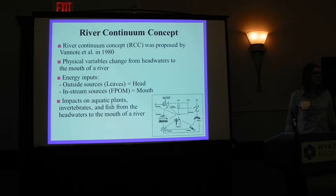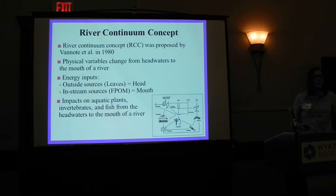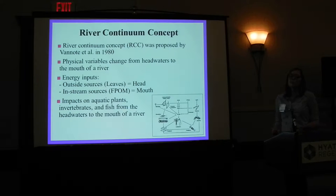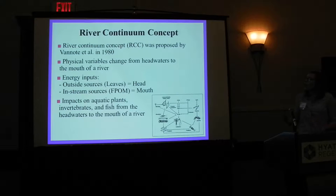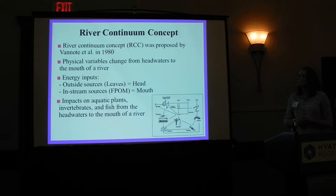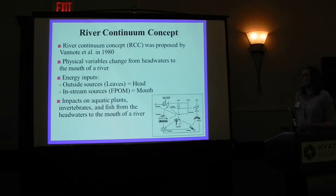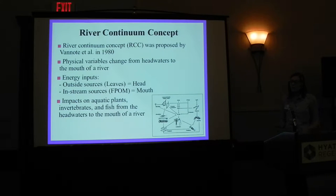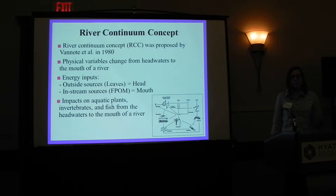So first off, what is the river continuum concept? This concept was proposed by Pinot et al. in 1980, and it really describes biological community responses to changes in physical variables throughout the river system. One of the biggest changes throughout the river is energy inputs. In the headwaters, the inputs are outside sources such as leaves, becoming really important. When you go down to the mouth of the river, that becomes more in-stream sources, such as fine particulate organic matter. The RCC has impacts on everything within the river system.